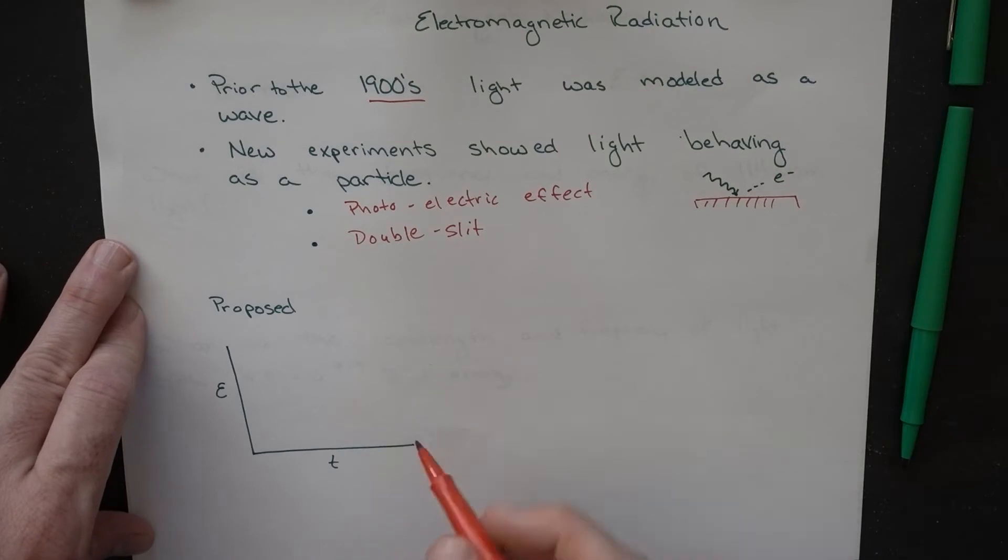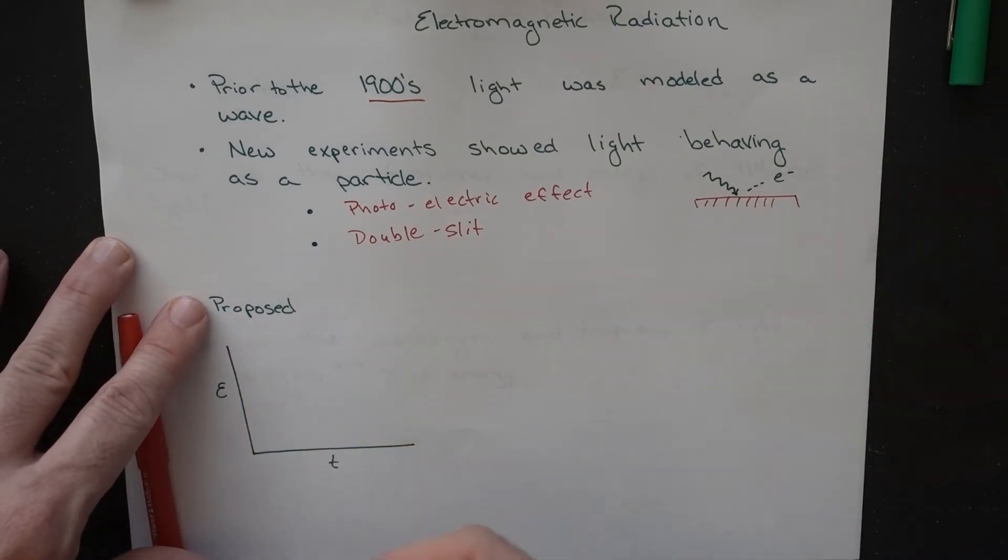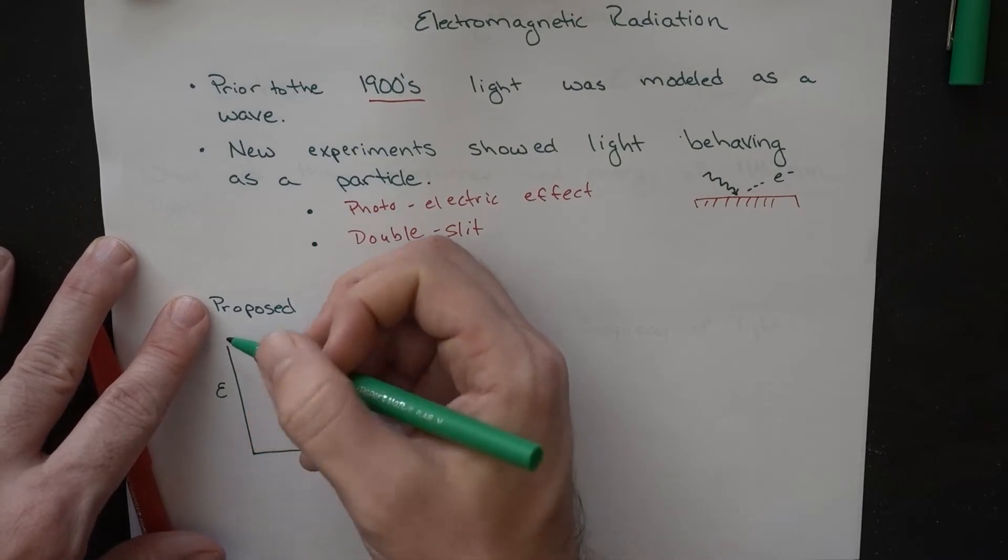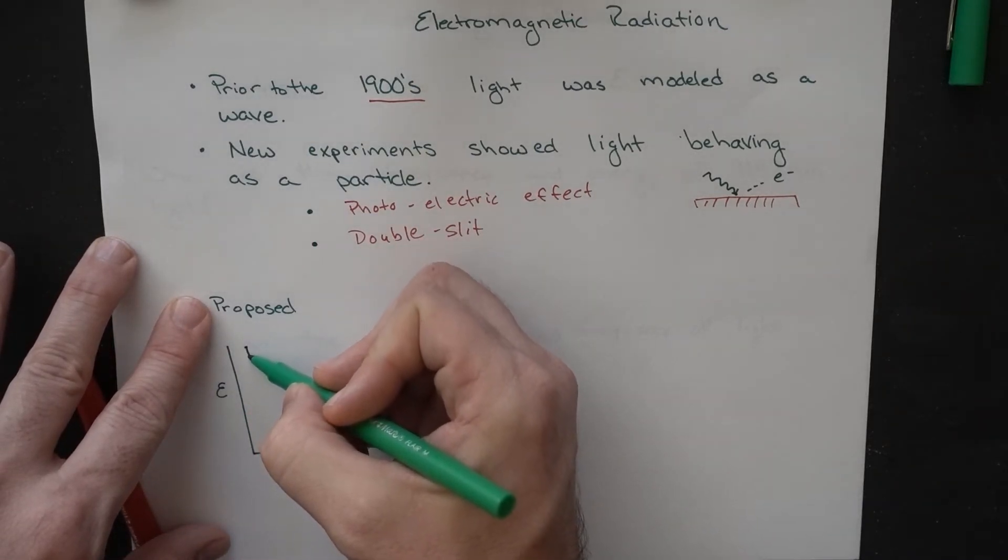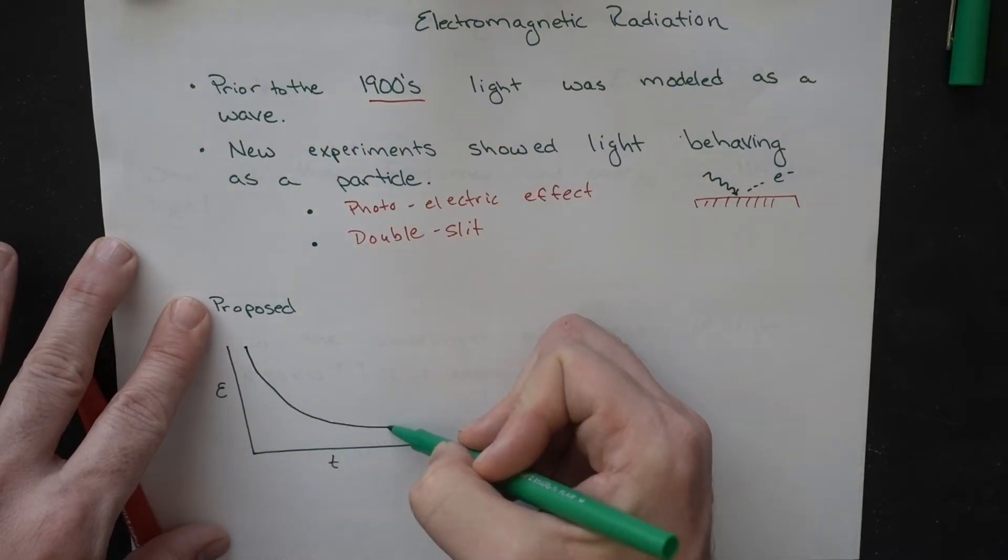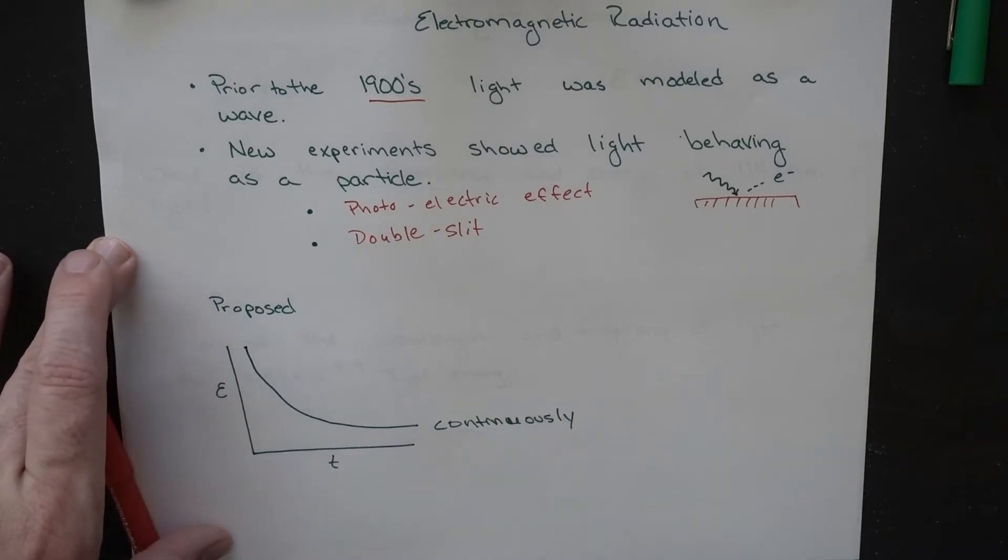Another thing that was proposed at the time is that when something absorbs energy, gets a whole lot of energy, and then it emits energy like a black body radiator, it would do so continuously. All the energy absorbed would be given off in a sort of smooth and continuous fashion.